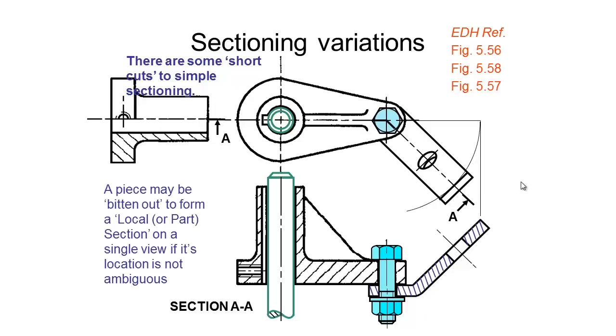We can also take what is called a local or part section. A piece may be bitten out of an object to form this view. An example of this is if we had something like this woodruff key coming through this hole and intersecting with this shaft. As you can see we've only taken a small chunk out of the shaft and sectioned it because there is no real need to section the rest of the shaft to show what is happening.